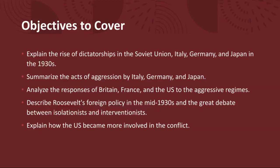Next, we'll be summarizing the acts of aggression by Italy, Germany, and Japan. These regimes were aggressive and pursued territorial expansion through military conquest and military strength. Italy invaded Ethiopia in 1935 seeking to establish an African empire. Germany reoccupied the Rhineland in 1936, annexed Austria in 1938, and later invaded Czechoslovakia in 1939. Meanwhile, Japan launched invasions of Manchuria in 1931 and China in 1937, escalating tensions in the Asia-Pacific region.